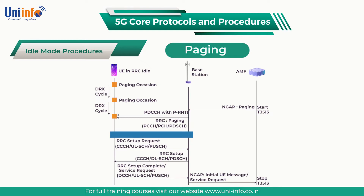In this case, the AMF may send the paging message to only that single base station rather than all base stations within the registered tracking areas. If the paging attempt is unsuccessful, the AMF can resend the paging message using the full set of base stations. This type of solution reduces paging load at the cost of increased delay for UEs which have moved to a different base station.